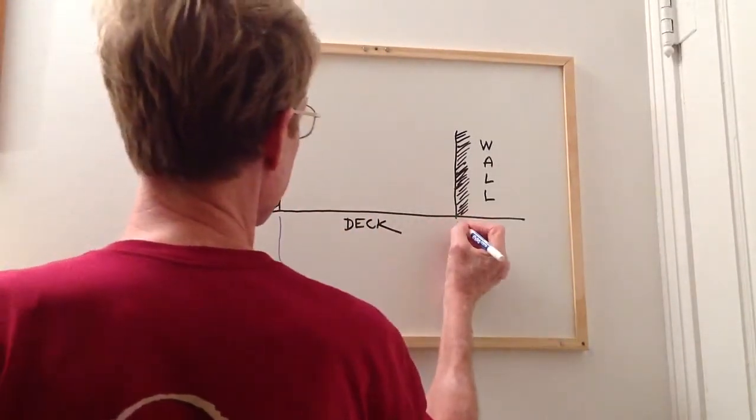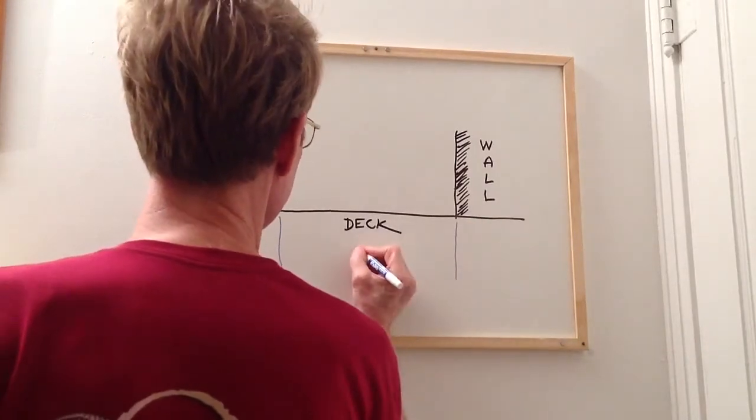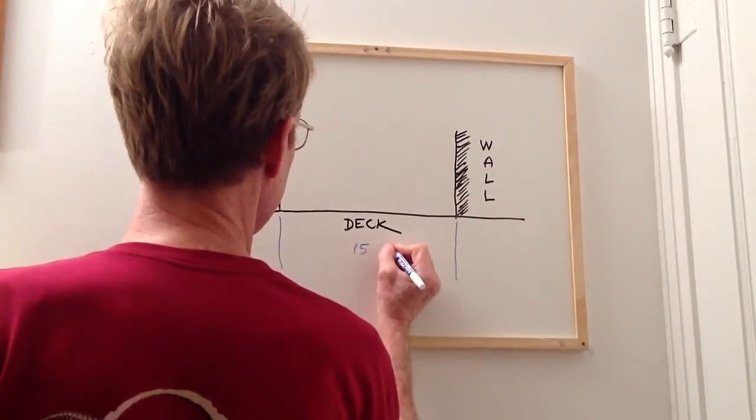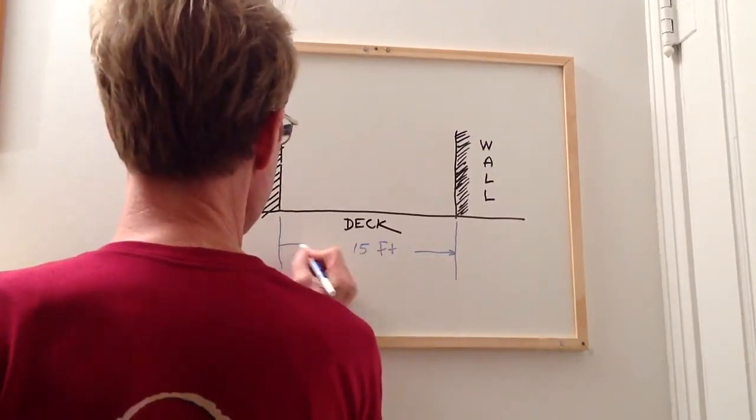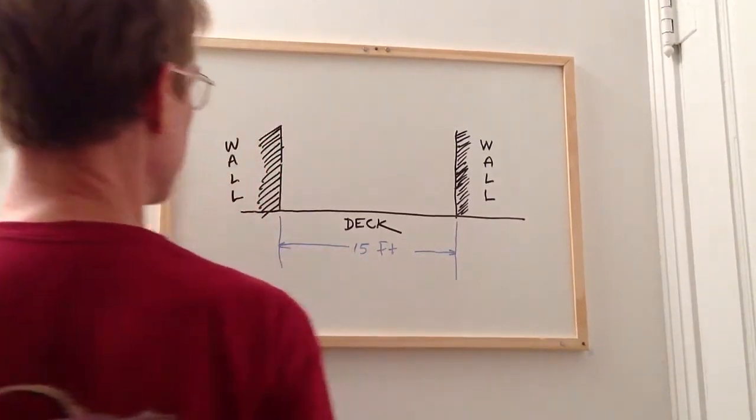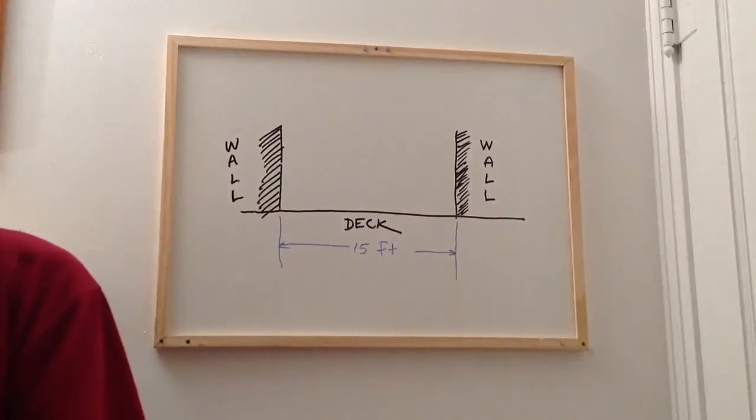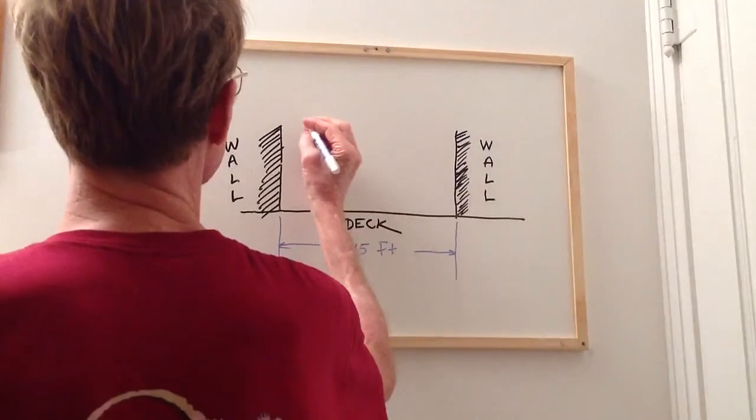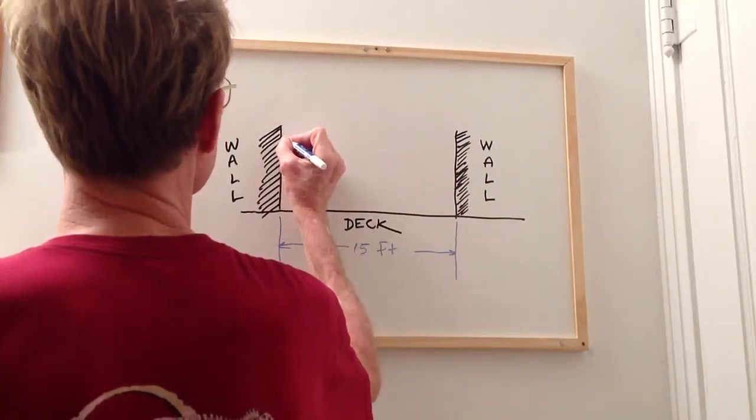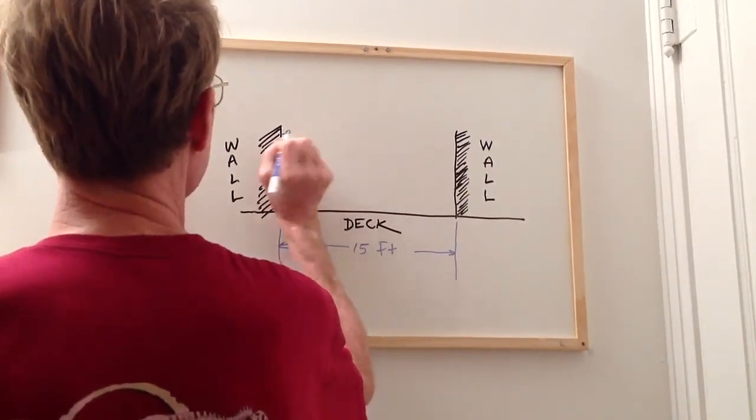My deck is approximately 15 feet wide. That's more than enough room for a simple 6-meter dipole. I think that most decks probably are also more than wide enough.